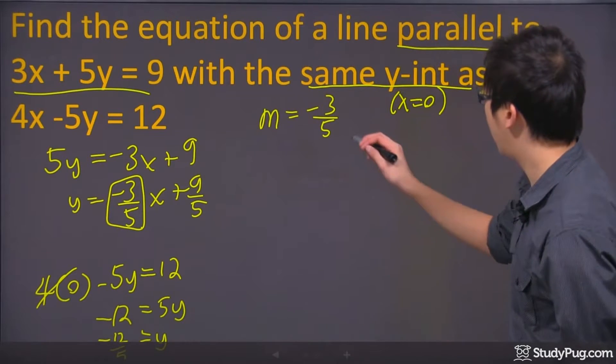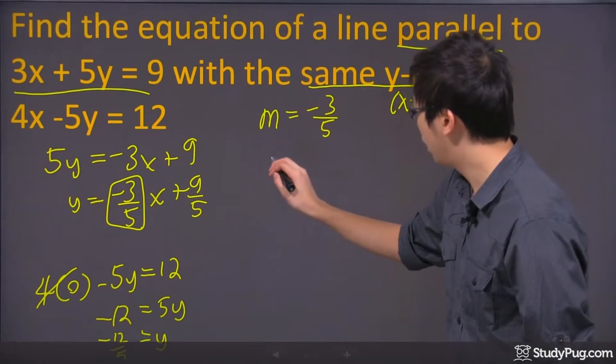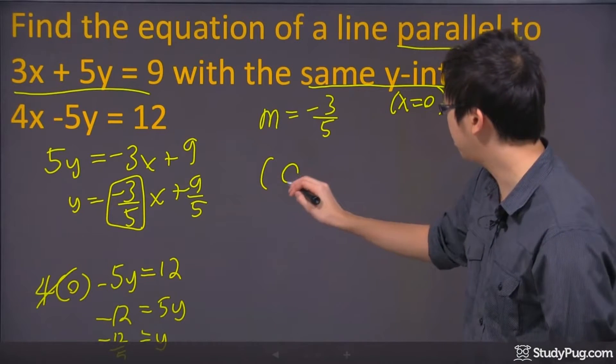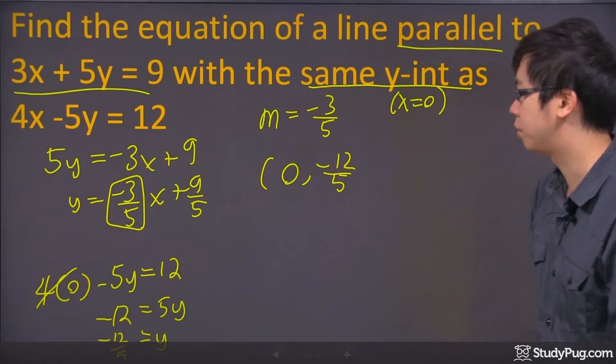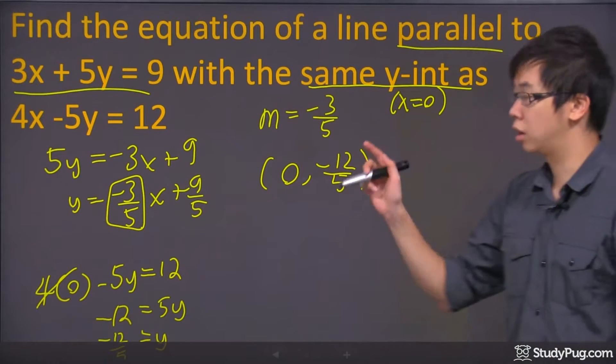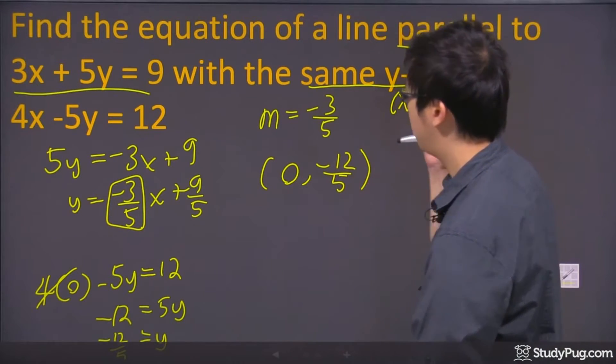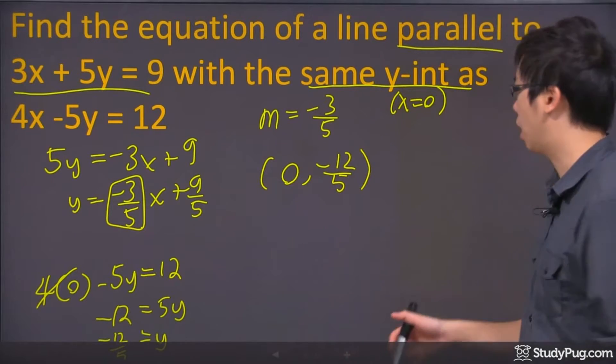So what happened is I also know the slope and I also know the point, which is 0 and negative 12 over 5. So can we find an equation? Given that we know the slope, we know there is a point. Of course we can.